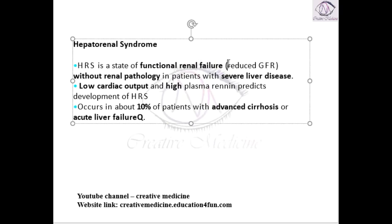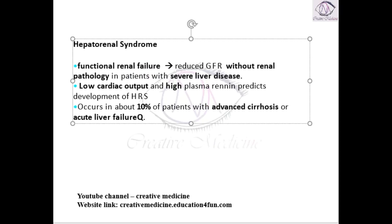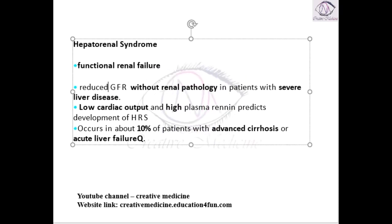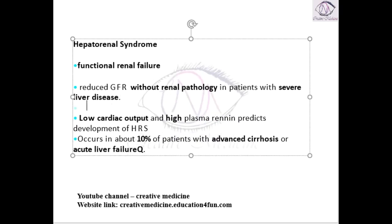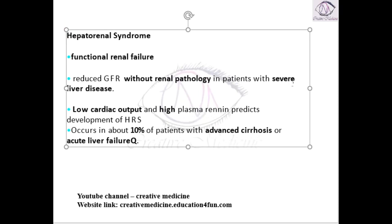There is reduced glomerular filtration rate seen without any renal pathology, in patients with severe liver disease. The patient's kidney is completely normal. There is liver disease, and because of this liver disease there is reduced glomerular filtration rate.